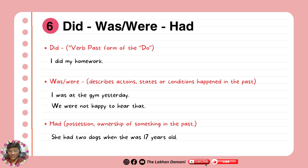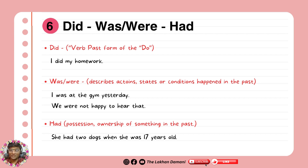Had is used for possession or ownership of something in the past. For example, I had two glasses — I'm talking about the past; now I don't have two glasses anymore. She had two dogs when she was 17 years old — that time she had them, but not anymore. Compare: I have a really expensive laptop (present) versus I had a PC — but now I have a laptop. So had expresses past ownership you no longer have.